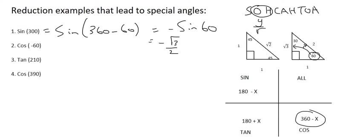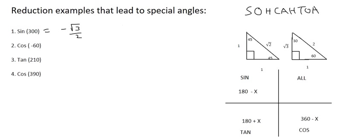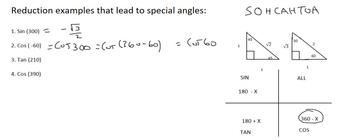The next one is cos of minus 60. Minus 60 is not on the CAST diagram, so we add 360 to get cos of 300. Then 300 is in the fourth quadrant, so we rewrite it as 360 minus 60, which reduces to cos 60. Because cos is positive there, the answer stays cos 60. Using the special triangle, cos is adjacent over hypotenuse, which is 1 over 2. So the answer is a half.